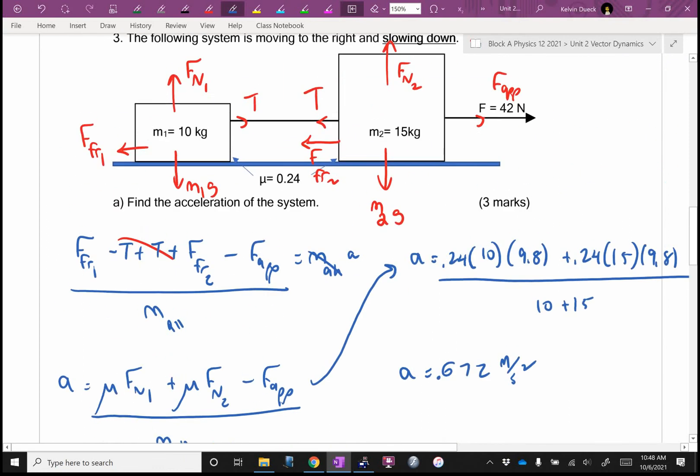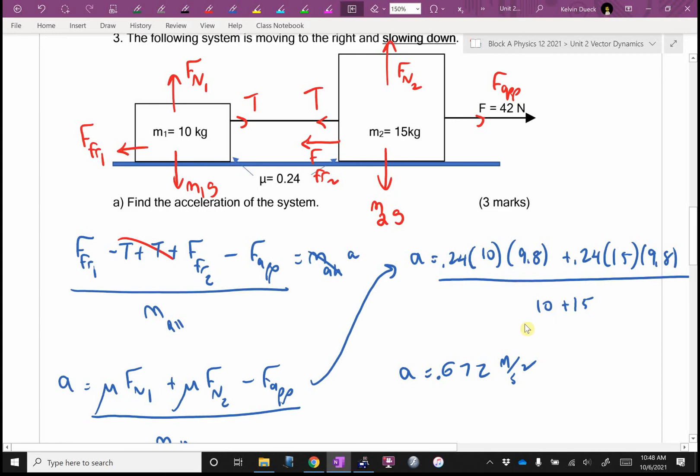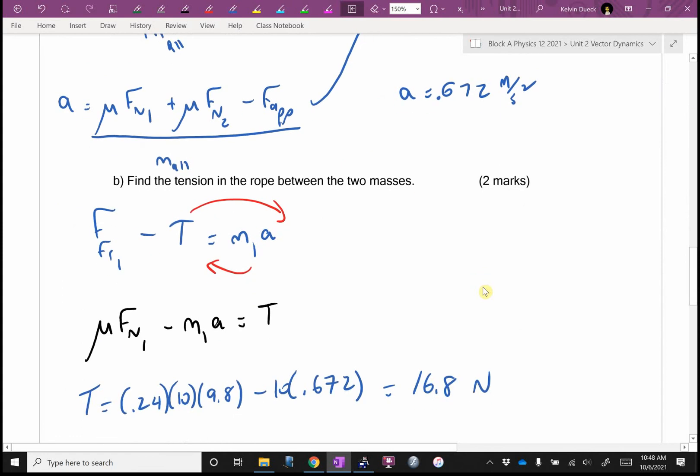So the other tension, it would be F applied minus, sorry, it would be tension minus F applied equals MA. Sorry, it would be tension plus friction minus F applied equals MA. Oh, did you forget to include the friction? There you go. So I would give you probably 1.5 out of 3. Sorry, this was two marks. I would give you 1 out of 2.